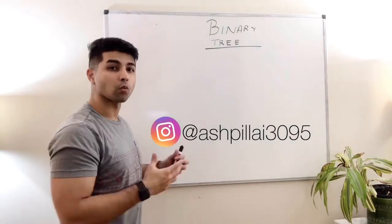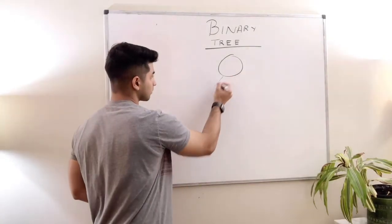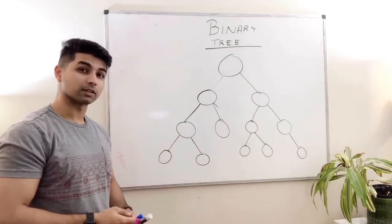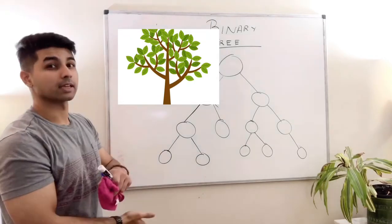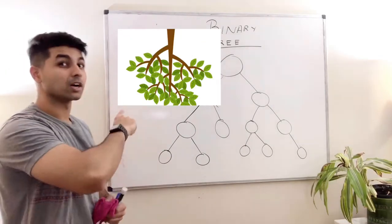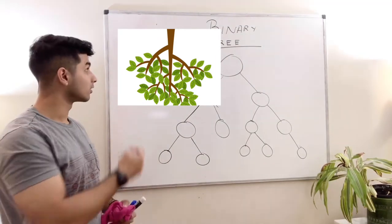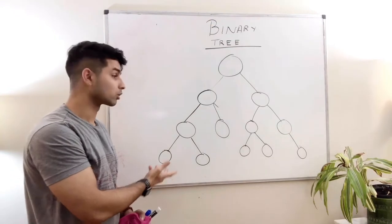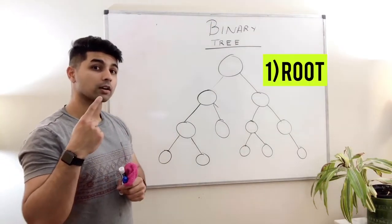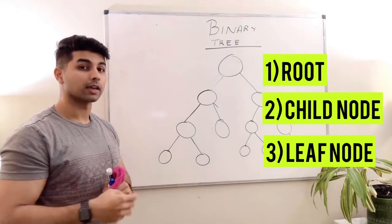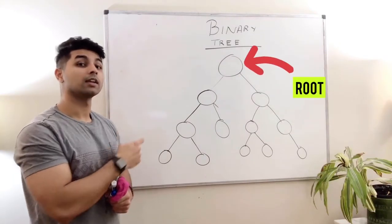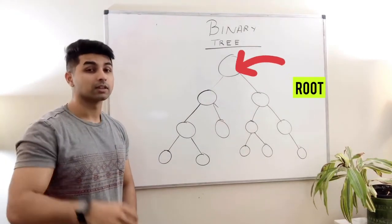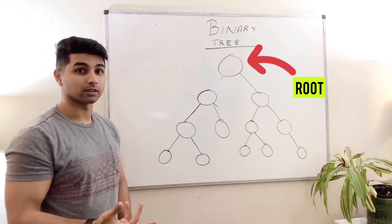Let's go ahead and understand what a binary tree really even is. This is a rough skeleton of a binary tree. It's called a binary tree because it resembles an upside-down tree — you have a root, branches, and leaves. The four things you need to know: root node, child node, leaf node, and parent node. The root node is that particular node at the top, and each node can have at most two children — it can have one or zero, but no more than two. Hence it's called a binary tree.